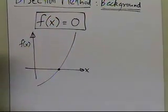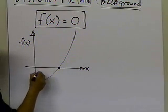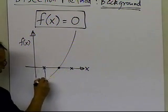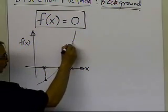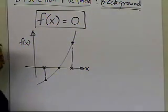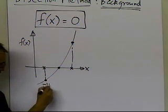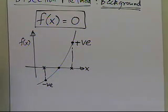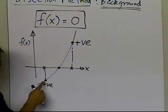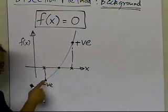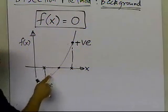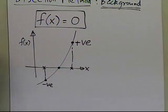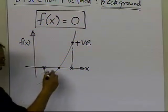The bisection method is based on choosing one point and another point, and looking at the value of the function at each. The value of the function at one point is negative, and at the other is positive. Since the function is continuous, it has to cross the x-axis — you cannot go from negative to positive without crossing it. So if it's crossing the x-axis, it's crossing the root.